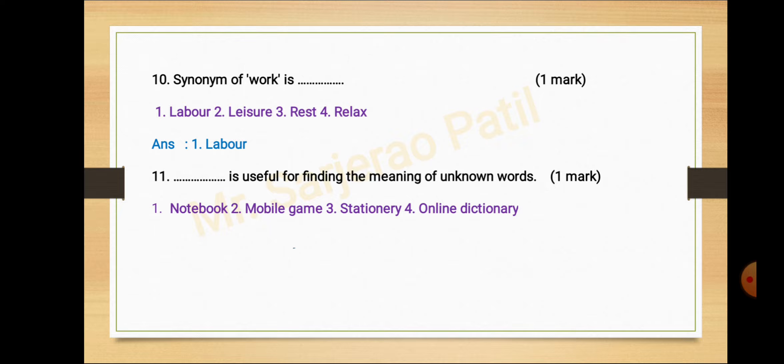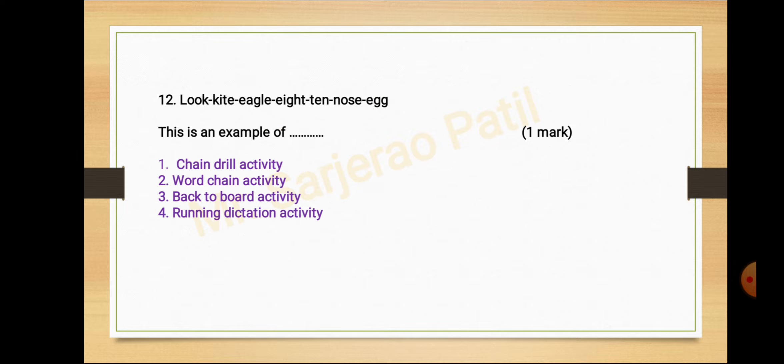Activity number twelve. Look, kite, eagle, eight, ten, nose, egg. This is an example of dash dash. Option number one chain drill activity, second word chain activity, third back to board activity, fourth running dictation activity. Answer is word chain activity.